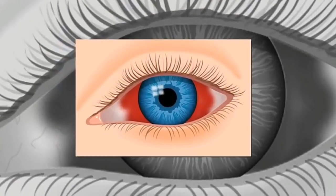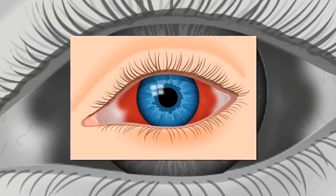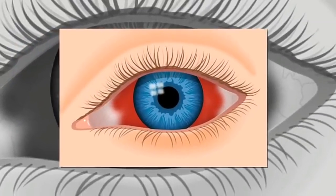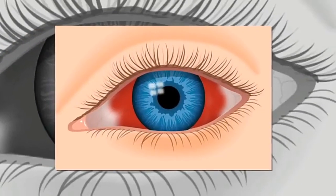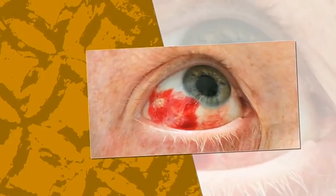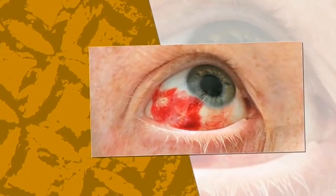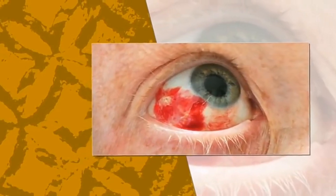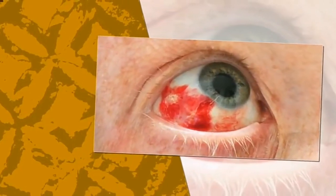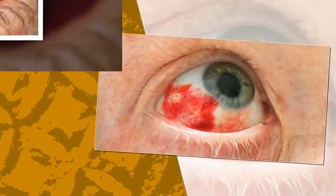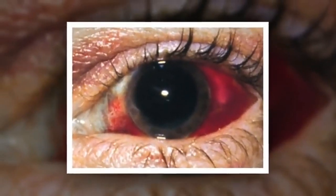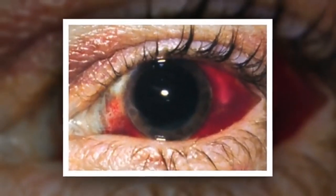Diabetes, high blood pressure, and eye strain are some factors that can cause eye hemorrhages. Bleeding in the eye is, however, often without an obvious cause and sometimes can occur from everyday incidents such as sneezing, coughing, or eye rubbing.